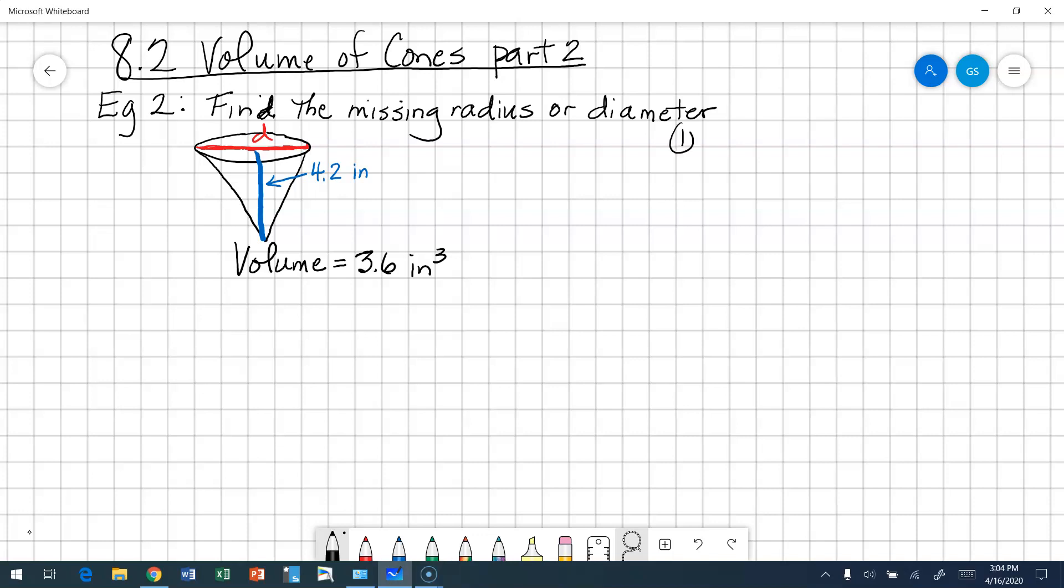We have our picture on our paper, and then the next thing we're going to need is our formula for volume. So volume of a cone, volume is equal to, it comes to a point, one-third area of the base times the height.